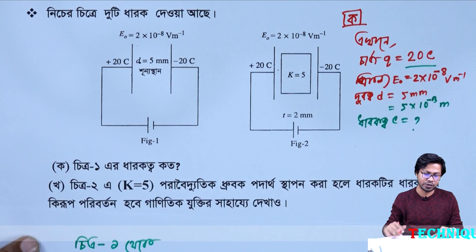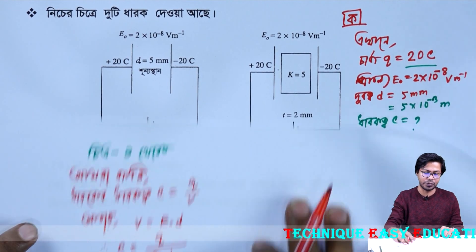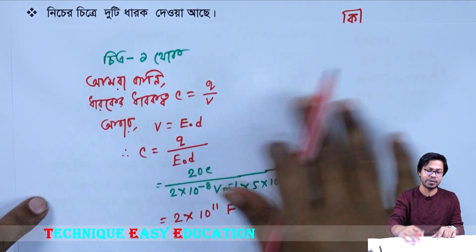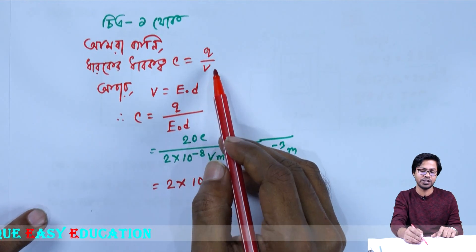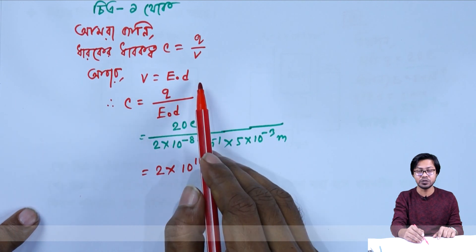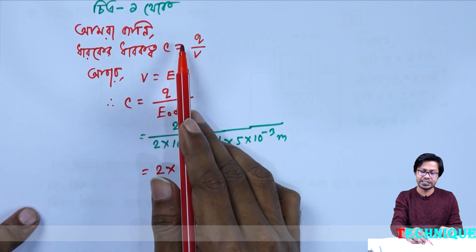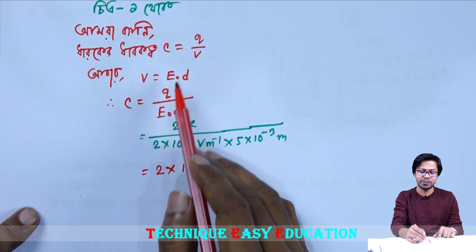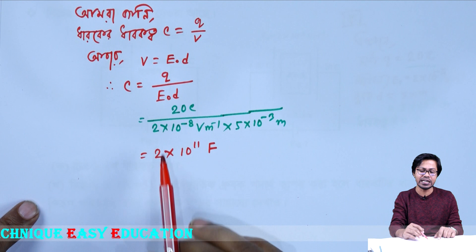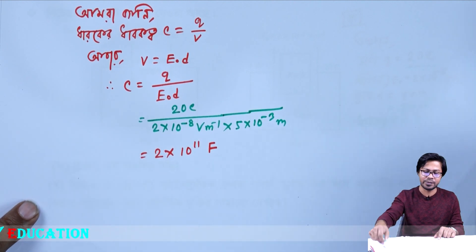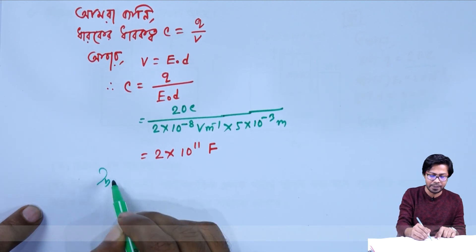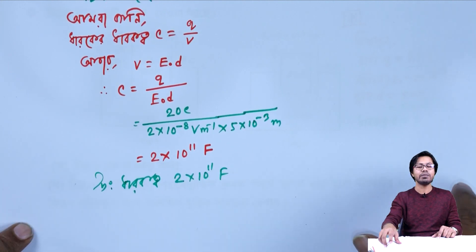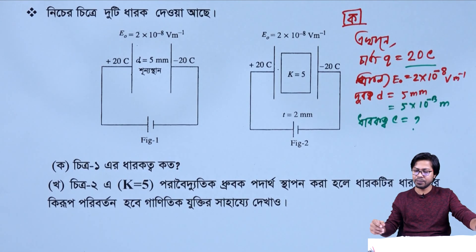We have to say that the math is the math. We know V equals to E naught into d. If you write the math is possible. To do this math, it's 2 times 10 to the power 11. Look at this math.